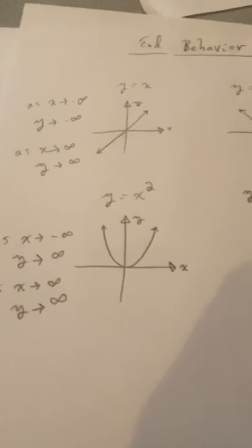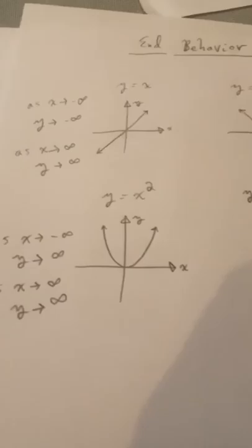Here's an example for odd degree with positive leading coefficient, even degree with positive leading coefficient, odd degree with negative leading coefficient, and even degree with negative leading coefficient — covering all four categories of end behavior.